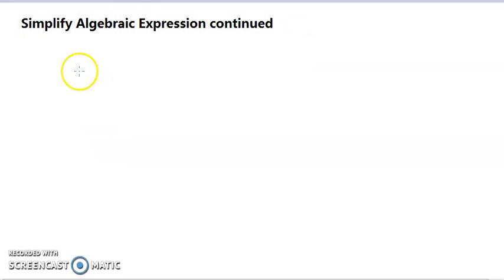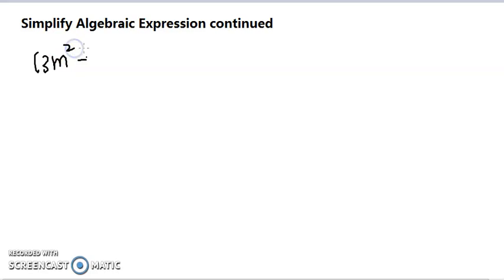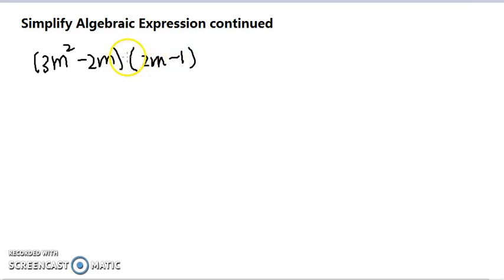We continue to look at how to simplify algebraic expressions. The next problem is 3m squared minus 2m times 2m minus 1. There's nothing between the parentheses, so the operation is multiplication. In order to do multiplication, we have to use the distributive principle.